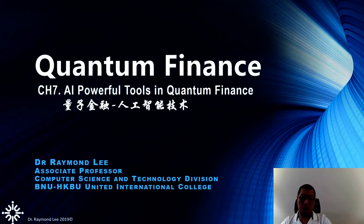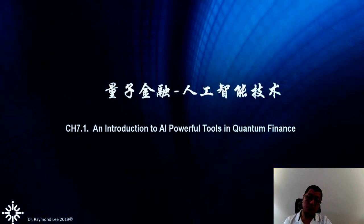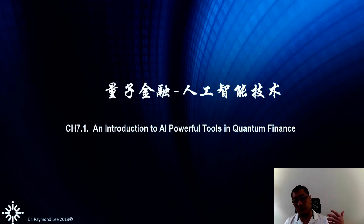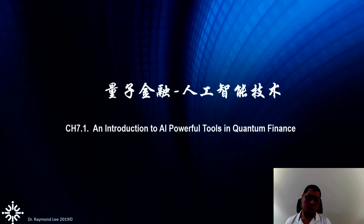Because this chapter is so intensive, I decided to break it down into two micro lectures. Today we focus on the AI basic concepts and artificial neural networks. Next week we will talk about the other two technologies — fuzzy logic and genetic algorithms. So today we will focus on the first part. Remember in our class over seven weeks we've talked quite a lot about quantum finance.